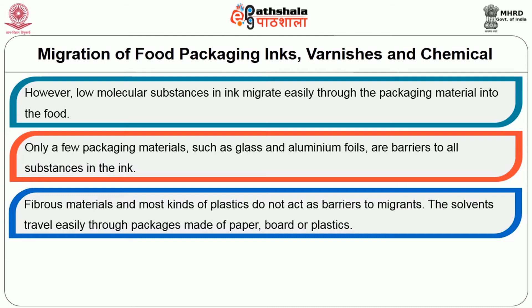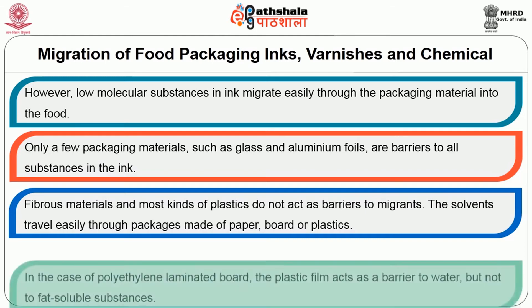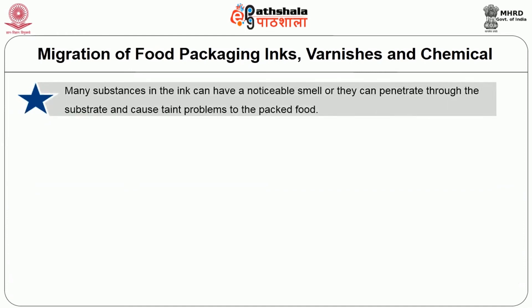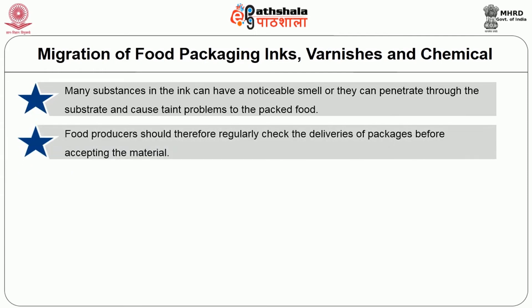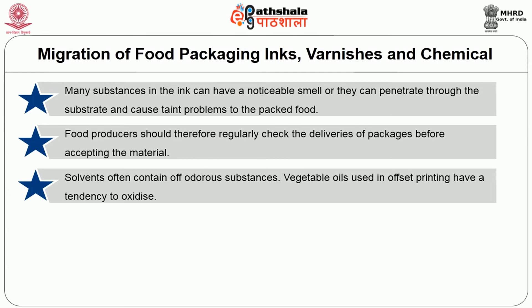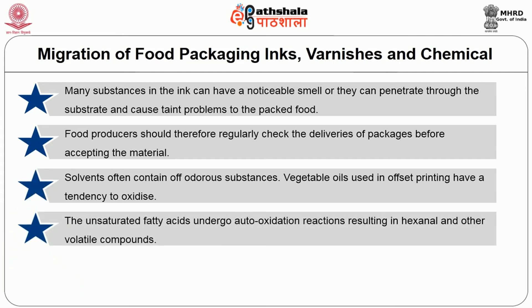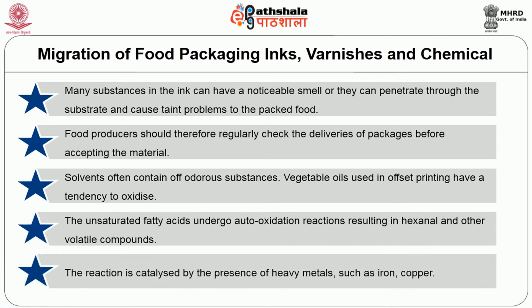The solvents travel easily through packages made of paper, board or plastics. In the case of polyethylene-laminated board, the plastic film acts as a barrier to water but not to fat-soluble substances. Many substances in the ink can have a noticeable smell or can penetrate through the substrate and cause taint problems to the packaged food. Food producers should therefore regularly check the deliveries of packages before accepting the material. Solvents often contain off-odorous substances. Vegetable oils used in offset printing have a tendency to oxidize; the unsaturated fatty acids undergo auto-oxidation reactions resulting in hexanal and other volatile compounds. The reaction is catalyzed by the presence of heavy metals such as iron and copper.